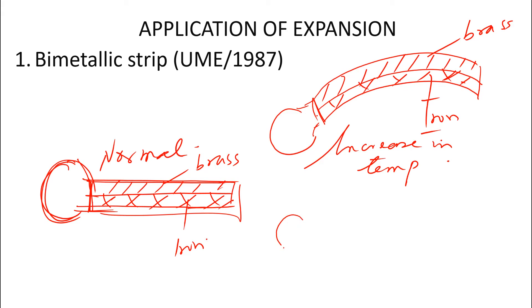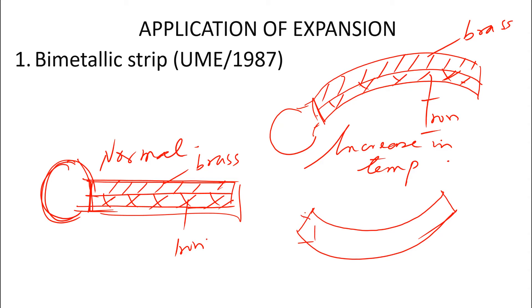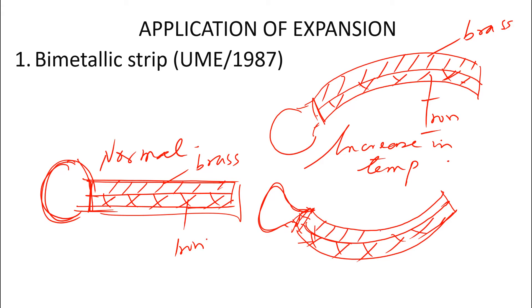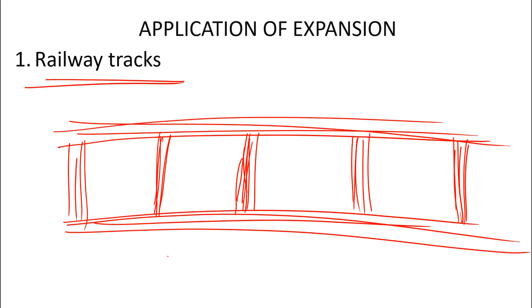When the temperature is cold beyond normal, the strip curves the other way, with the iron outside and the brass inside. This application is very important because this is what they use in making your thermostat, which is found in your electric pressing iron and some other electrical appliances.